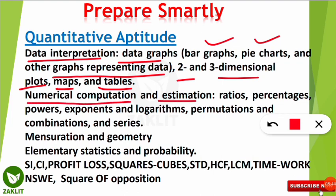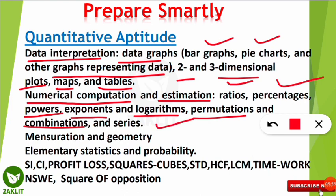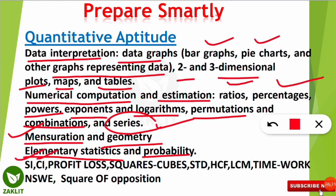Next is numerical computation and estimation, which includes ratios, percentages, powers, exponents, logarithms, permutation and combination, number series, and alphanumeric series. Mensuration and geometry are very important and easy — you should know volumes of the sphere, cylinder, and cube, which are school-level maths. Elementary statistics and probability are also included. Most frequently asked topics are simple interest, compound interest, profit and loss, squares, cubes, square roots, cube roots, and speed-time-distance.